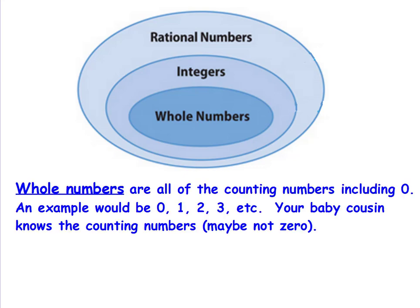Whole numbers are all of the counting numbers, including zero. An example would be zero, one, two, three, etc. Your baby cousin knows the counting numbers, but probably not zero.